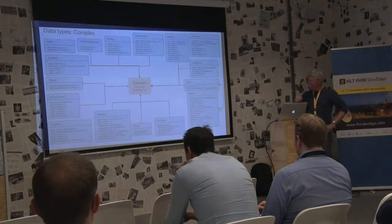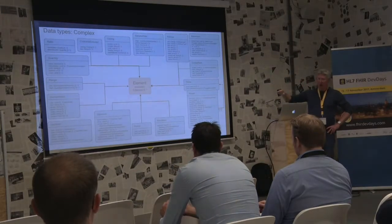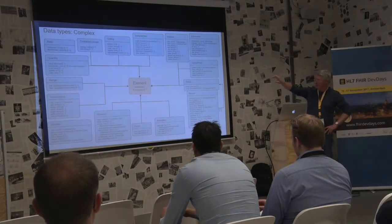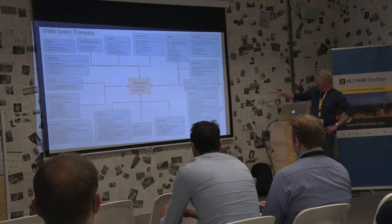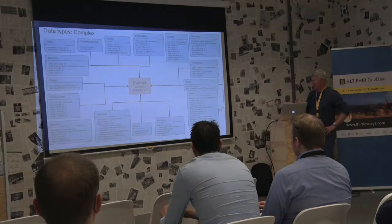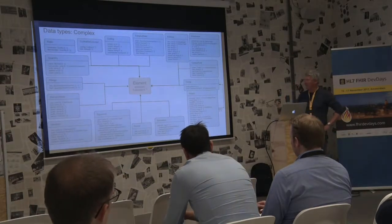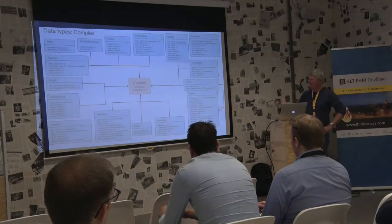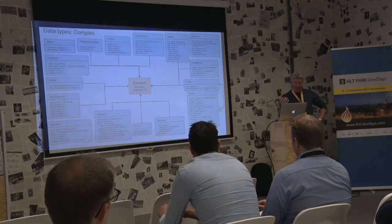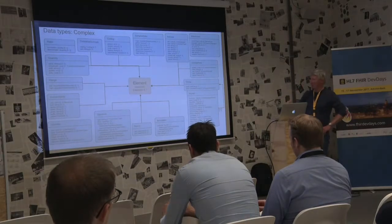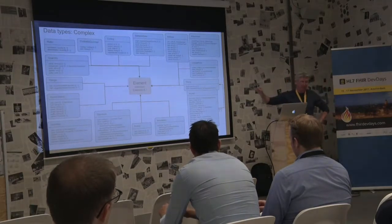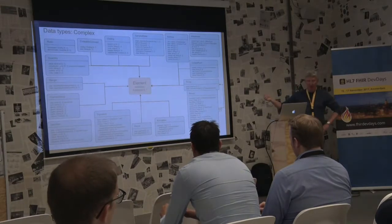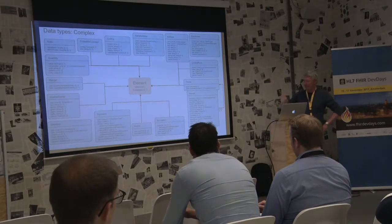Then we have the complex data types, which have child elements. Among the most important are the coded ones — codable concept, coding, sampled data. One of the really cool things about FHIR is that it's hyperlinked extensively; practically everything is a hyperlink. If you go into the spec and click on something, chances are it will take you to a description. Click on a data type in a resource definition and it'll take you to its definition.